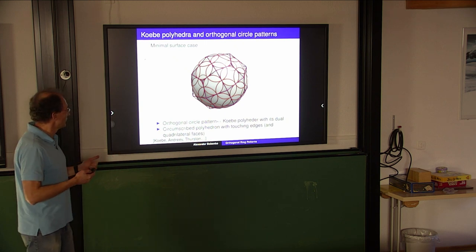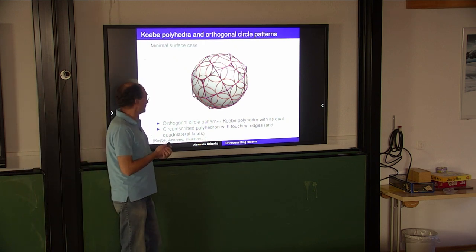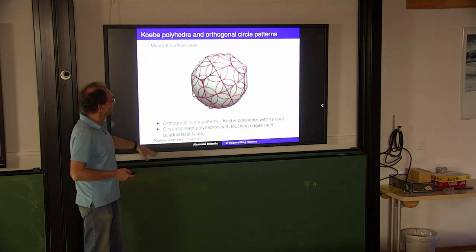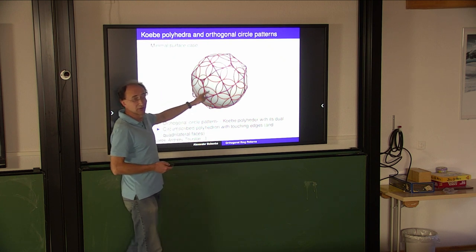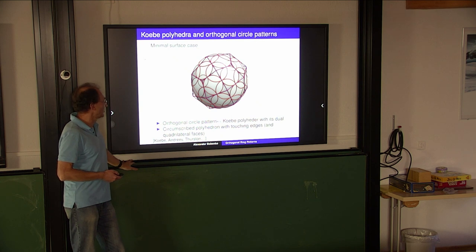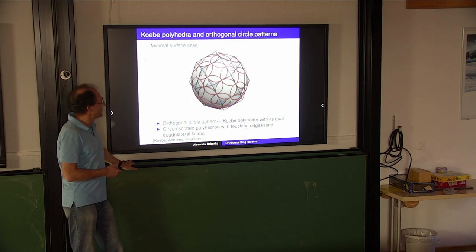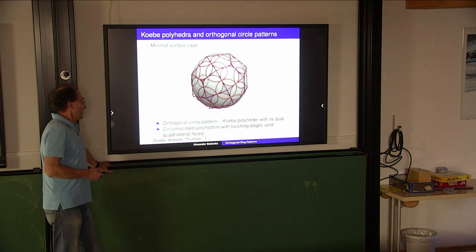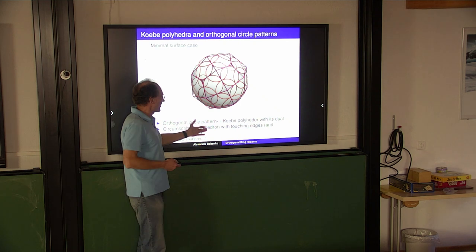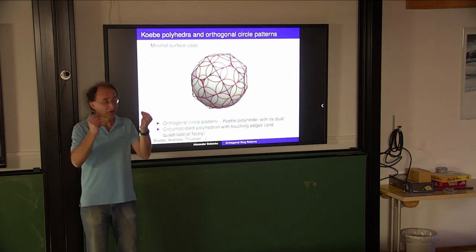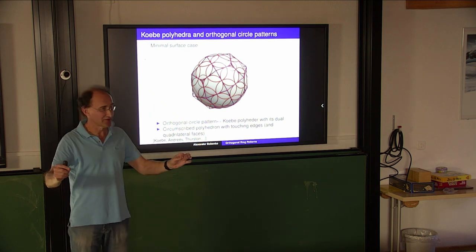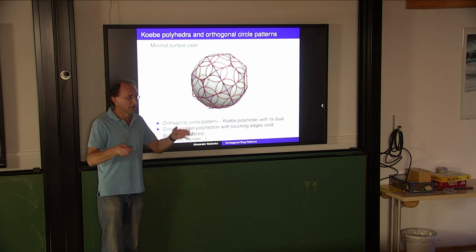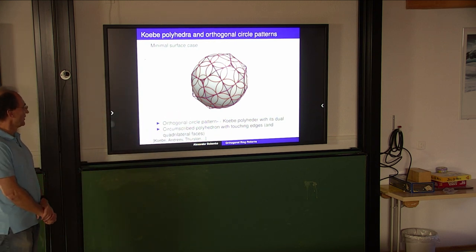We have integrable systems and ring patterns; now I would like to show how it is used in geometry. This is an example of an orthogonal circle pattern. As soon as you have an orthogonal circle pattern, you can take tangent lines at intersection points and build a polyhedron - this is the so-called Koebe polyhedron. They come in pairs. You simply take different directions for these edges and obtain a circumscribed polyhedron with touching edges: for this polyhedron, not the vertices lie on the sphere, not the faces touch the sphere, but the edges touch the sphere. There is a big theory about this, starting with Koebe, Andreev, Thurston.